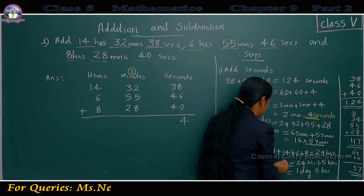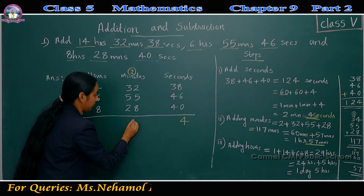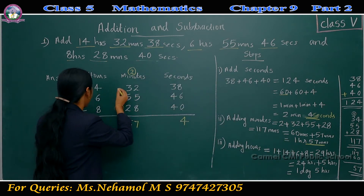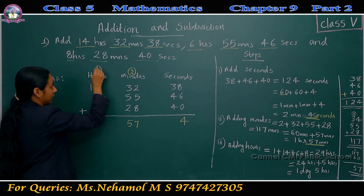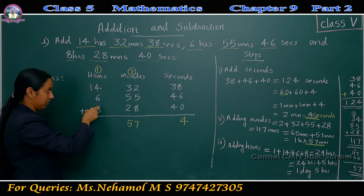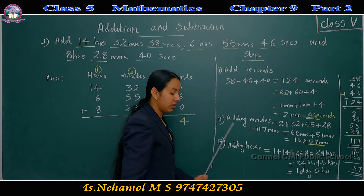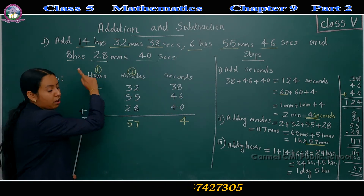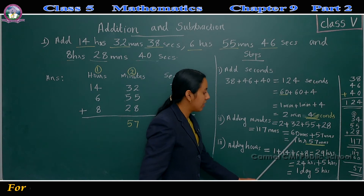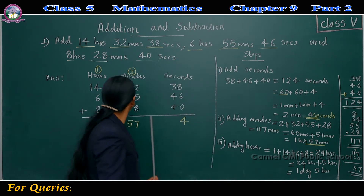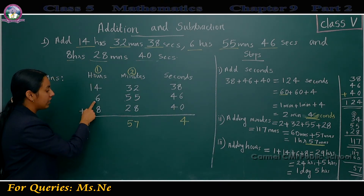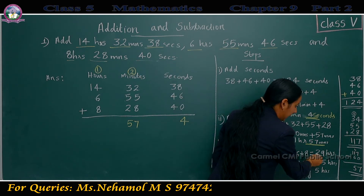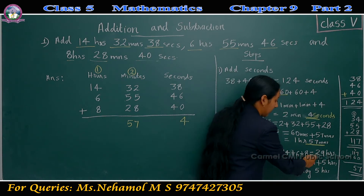We write 57 in the minutes column, and carry 1 hour. Third step: adding hours. 1 plus 14 plus 6 plus 8 — adding these numbers, we get 29 hours.